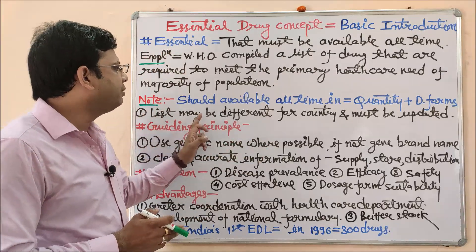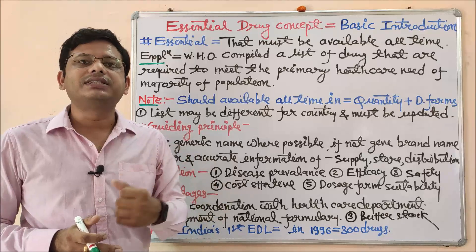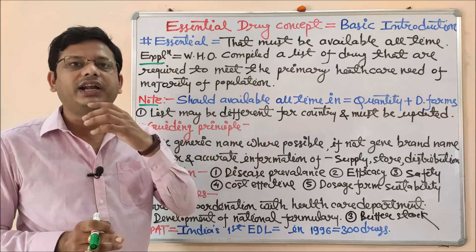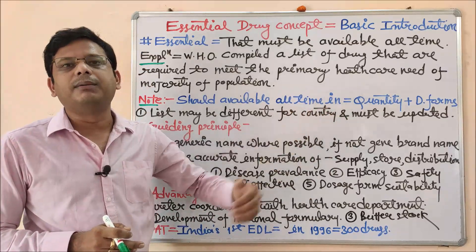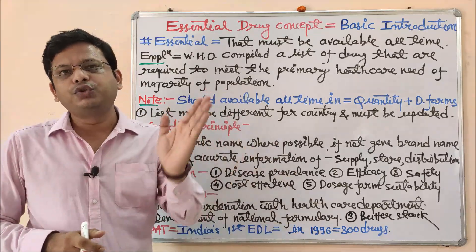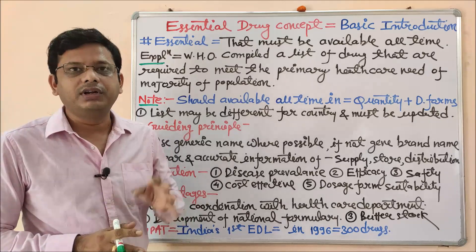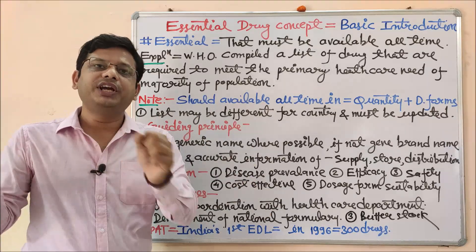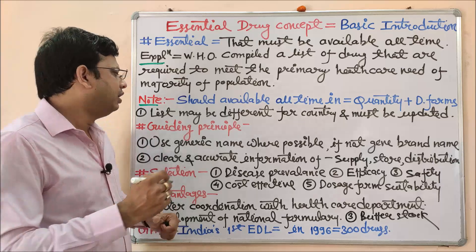The list may differ for different countries and must be updated regularly. The list of essential drugs may vary from state to state, country to country, and different organizations can also change or update their lists. It is not a hard and fast rule that a list made in 2010 should carry on until 2020. You should update it at proper intervals so that ineffective drugs may be excluded and more effective, safer drugs may be included.